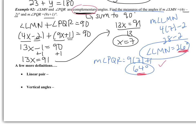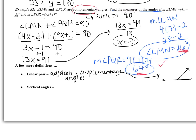A few more definitions. A linear pair consists of two angles that are adjacent and supplementary. This is what a linear pair looks like. Angles 1 and 2 form a linear pair — they are adjacent because they share a side, and they are supplementary because they add to be 180. Supplementary means a straight line, so their sum is 180.